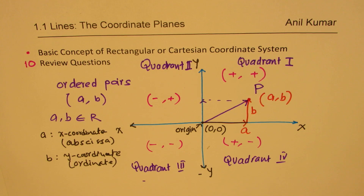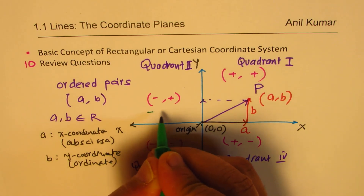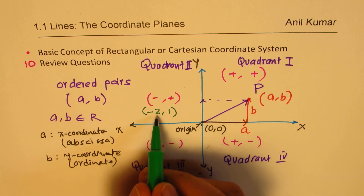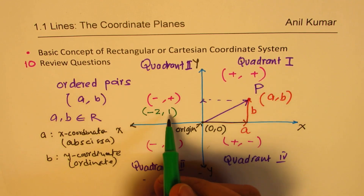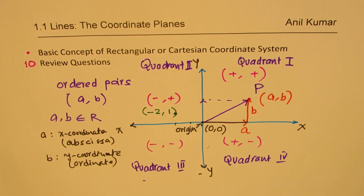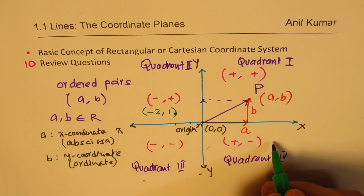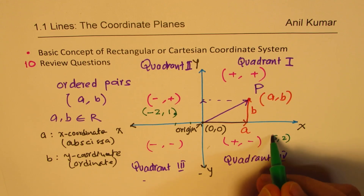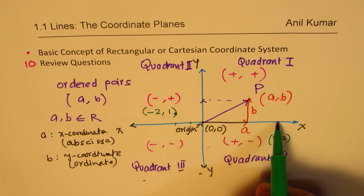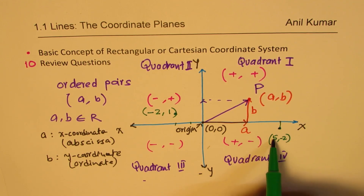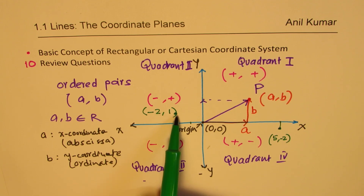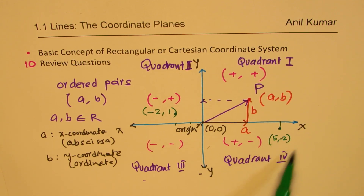If I have a point like (-2, 1), that means the point is in quadrant two — two units left and one unit up. However, if I write a point like (5, -2), that really means you move five units along the x-axis and two units down. So given the coordinates of a point, we can figure out in which quadrant the point lies.